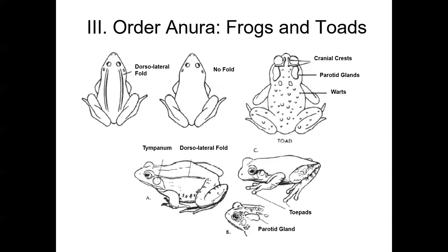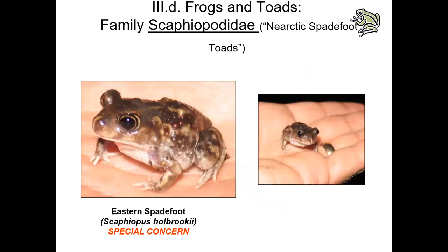Geographically, anurans range from above the Arctic Circle — yes, above the Arctic Circle — to South America, Africa, and Australia. They occur on all continents except Antarctica. Indiana is home to 16 species of anurans. So let's go through some of these families.